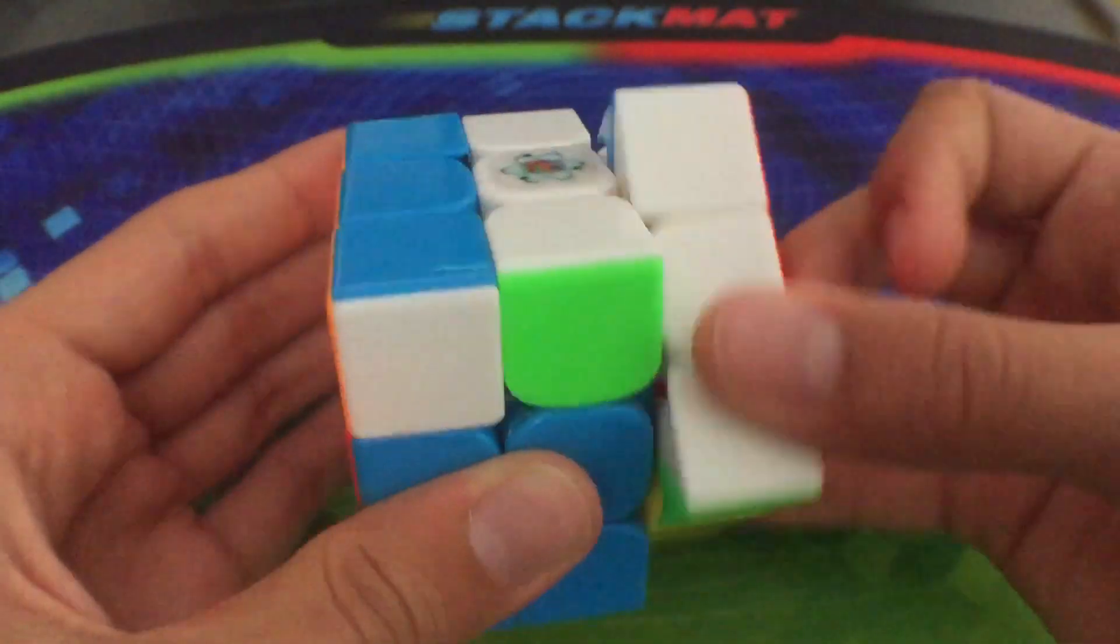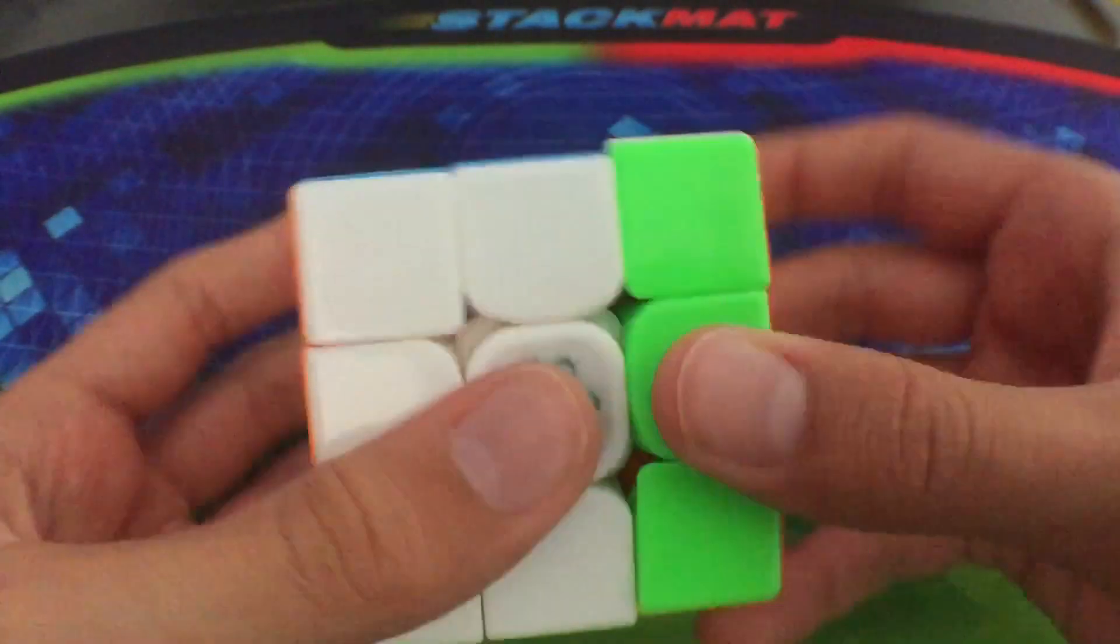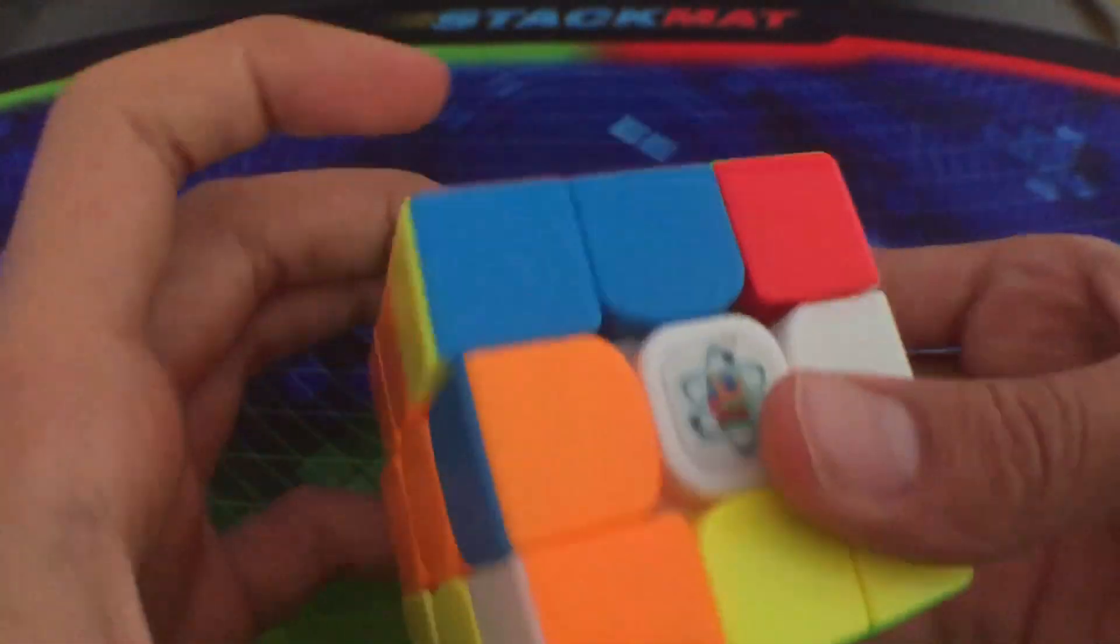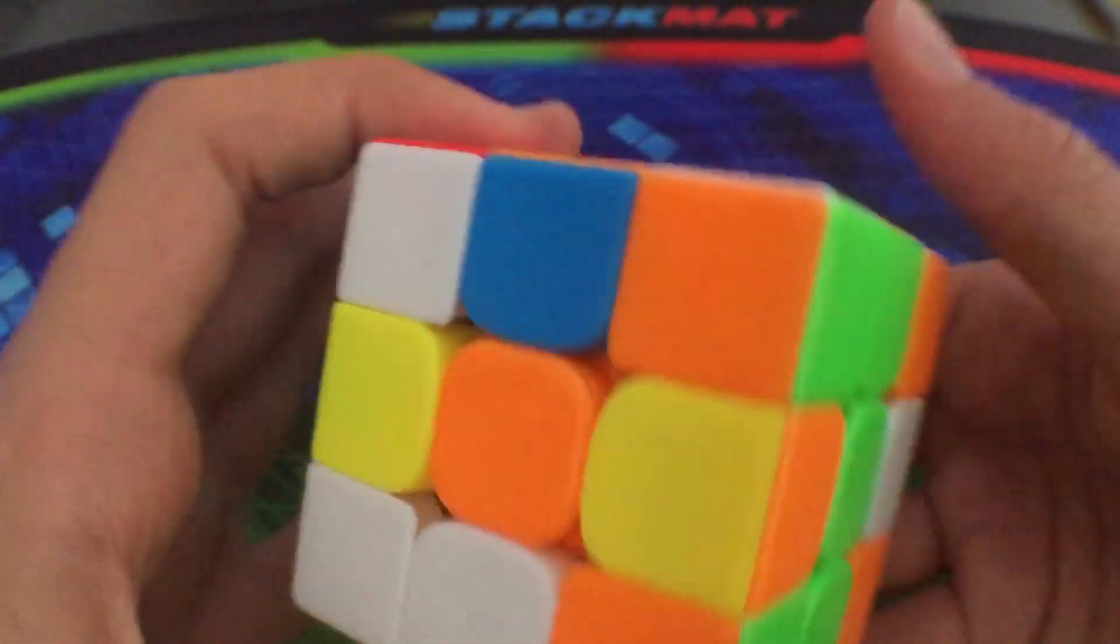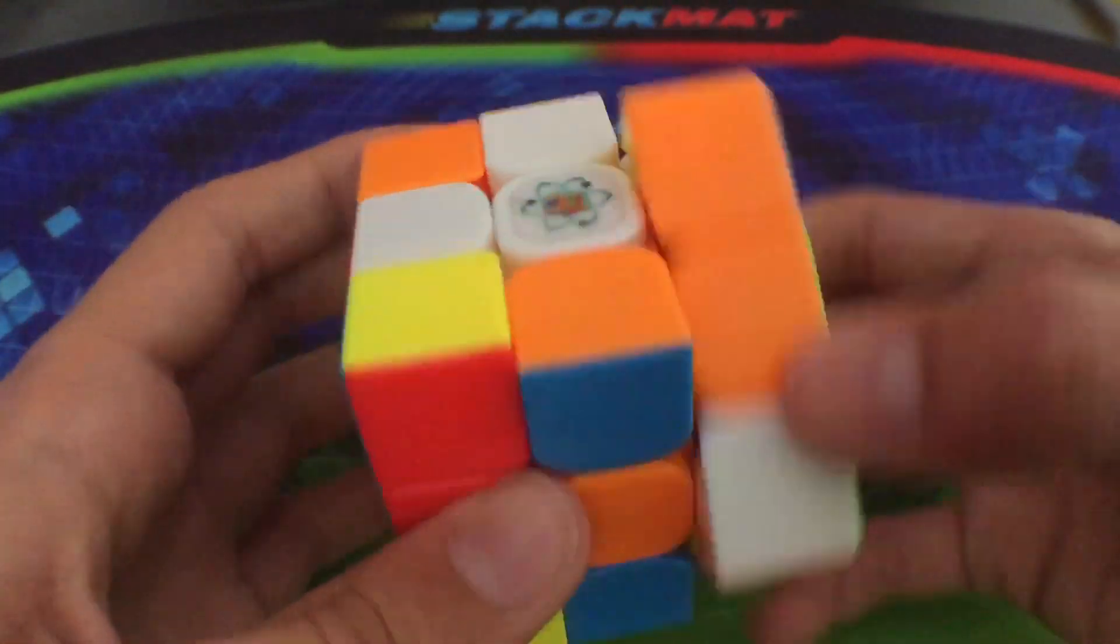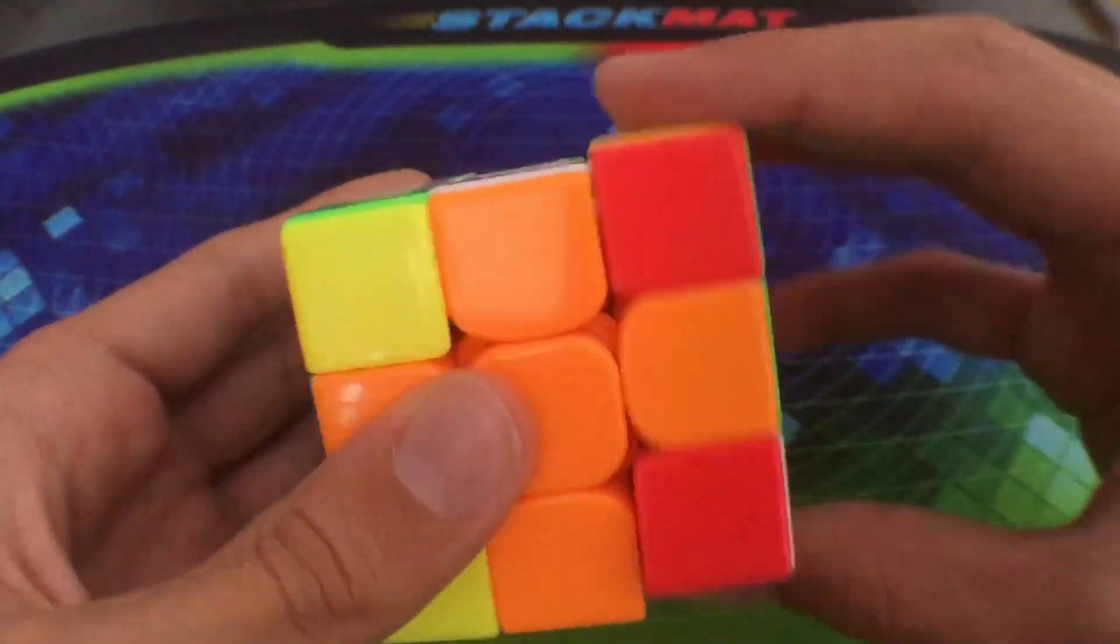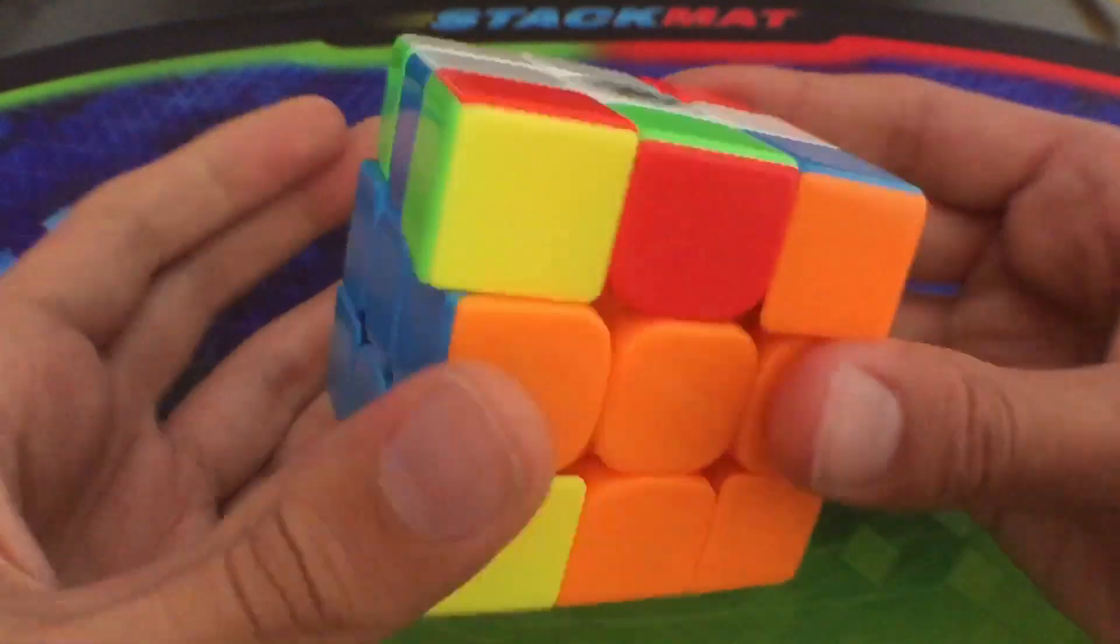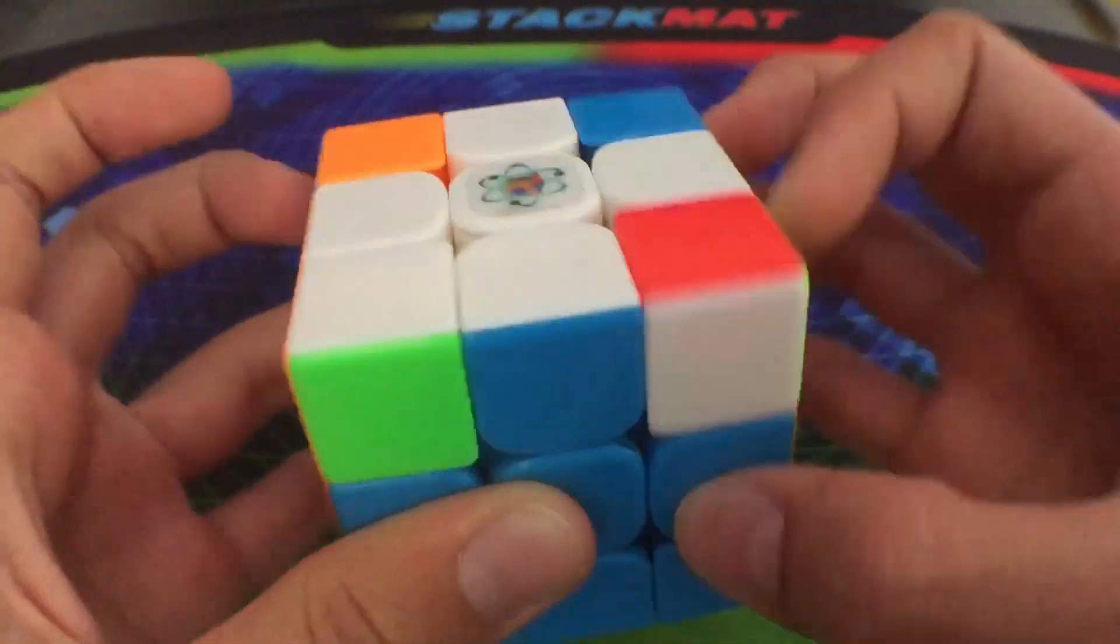So I'll go over that again: first we have the cross, so do L B, sets this up and set that pair, do this pair, this one, this one, OLL, and a PLL skip.